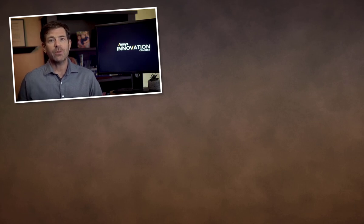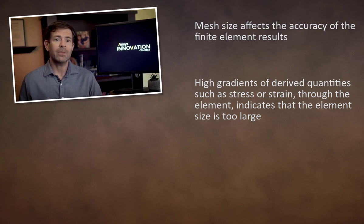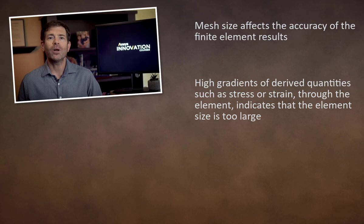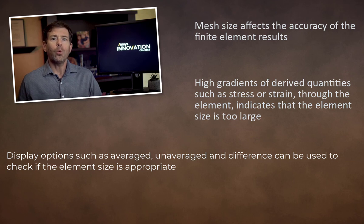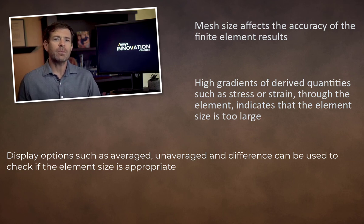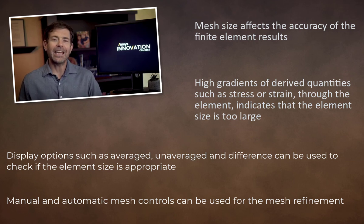So let's summarize. Finite element results are dependent on the mesh size specified. Seeing high gradients through the elements of derived quantities such as stress or strain is a good first indication that the element size may be too large. While we may not know the mesh size required to give accurate results before solving, using the results one can check and add mesh sizing as necessary. The results have display options such as averaged and unaveraged and difference that can be used for this check. With experience the appropriate element sizes can be specified. We used manual mesh size controls in this video, but there are more automated ways to achieve numerically accurate stresses that will be covered in another course. I hope you found this video informative. Thank you for watching and do check out our other courses to discover more useful learning resources.